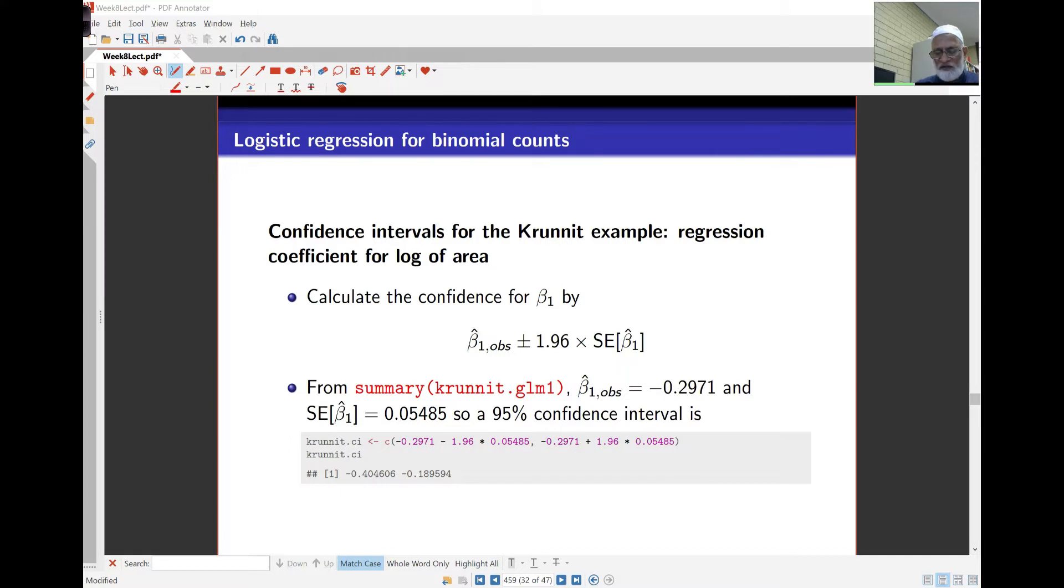Its standard error in the next column of the output is 0.05485. So a 95% confidence interval for beta 1 is simply by the formula: beta 1 hat minus 1.96 times the standard error, and the same with a plus in the middle. It comes to negative 0.4 and negative 0.189.